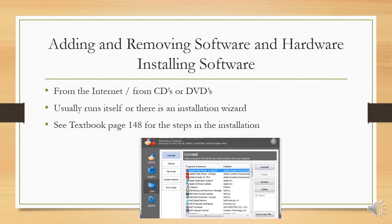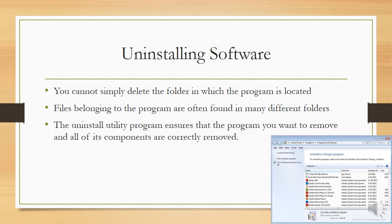When you add or remove hardware and software, you must use the facility provided in Windows — do not just delete software. Installing new software: you usually get it from the internet or a CD and DVD, and it usually runs by itself or there is an installation wizard; please refer to the book for more steps. Uninstalling software: it's not good enough to just delete the folder where the program is located, because there could be files belonging to the program found in many different folders you don't know about. Use the uninstall program found in the control panel when you want to remove software.